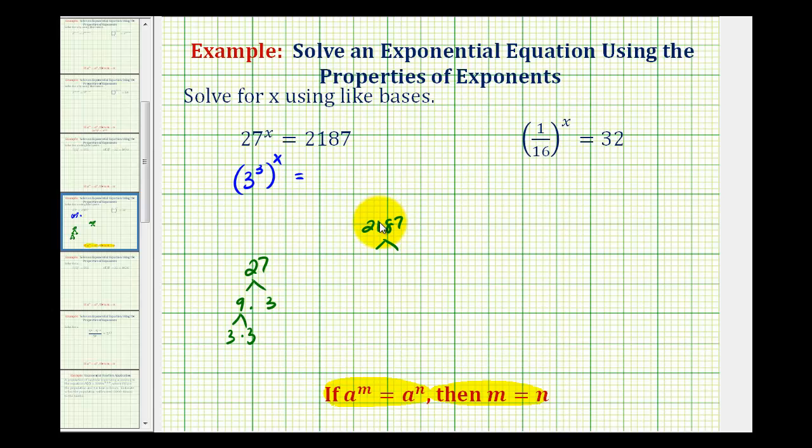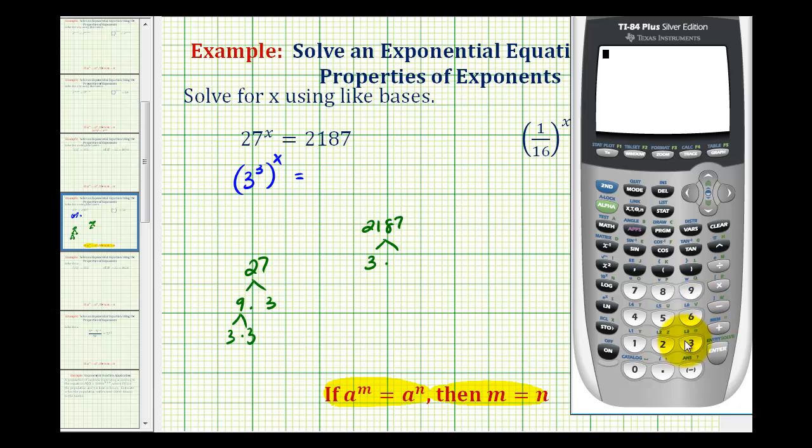Meaning, since 2 plus 1 plus 8 plus 7 is equal to 18, which is divisible by 3, so is this number. So we know it's going to be 3 times something. If we needed to, we could use the calculator and take 2,187 and divide it by 3 to help us.